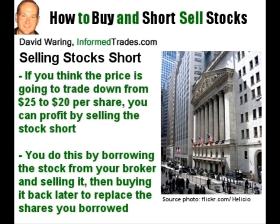Just as you can profit from the price of a stock going up in value by buying, you can profit from the stock going down in value by selling the stock short. You do this by borrowing the number of shares that you wish to sell short through your brokerage, selling them in the open market, and then buying them back when you're ready to exit the trade.